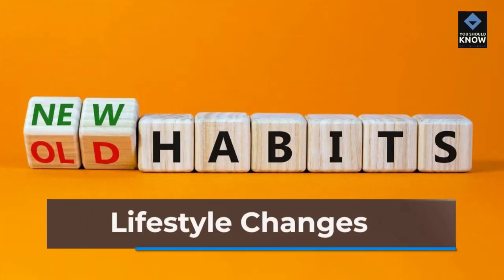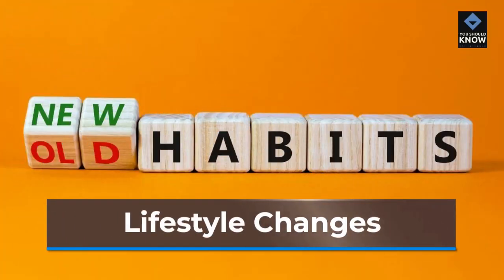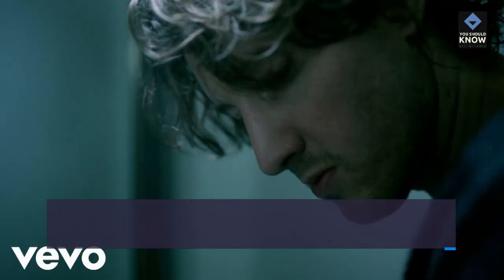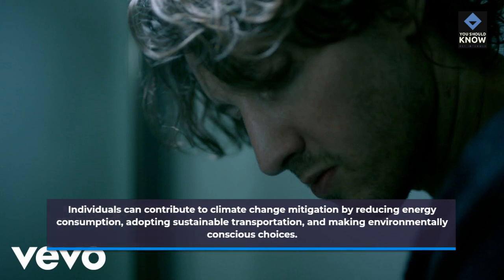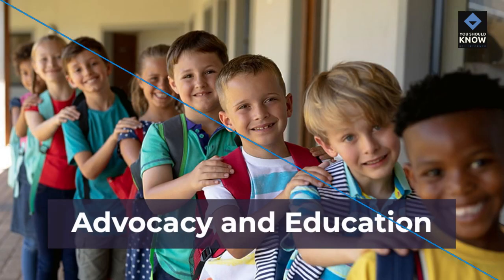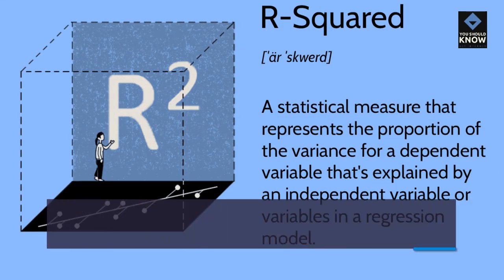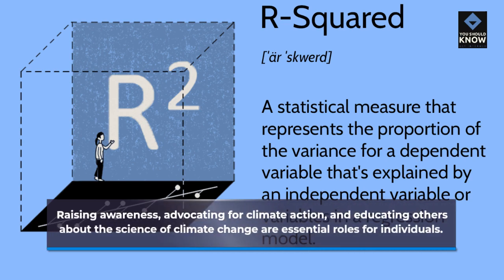The role of individuals. Lifestyle changes: individuals can contribute to climate change mitigation by reducing energy consumption, adopting sustainable transportation, and making environmentally conscious choices. Advocacy and education: raising awareness, advocating for climate action, and educating others about the science of climate change are essential roles for individuals.